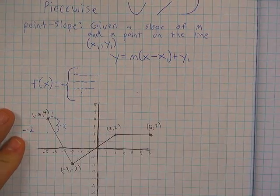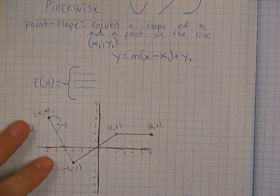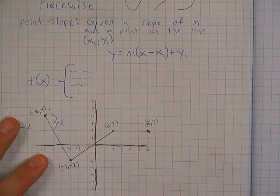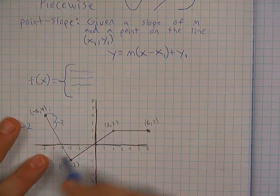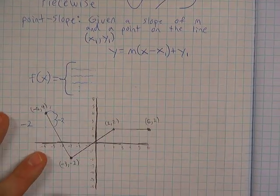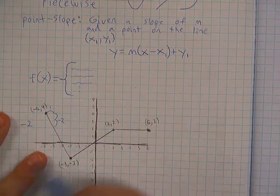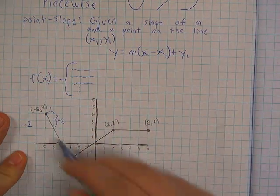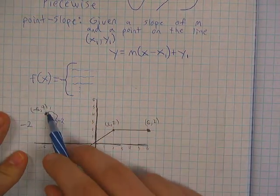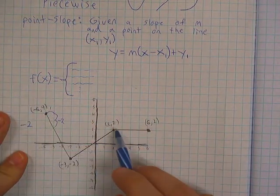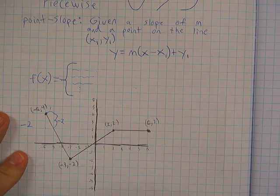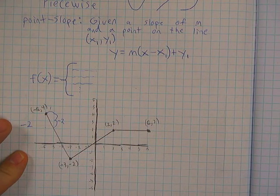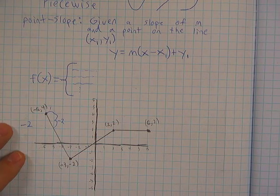But now you can run into functions that look like this, which are not quadratics, not an exponential curve, and not just one line going on forever in either direction. This is three lines put together at different points.